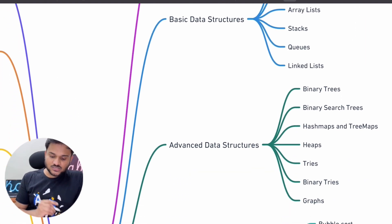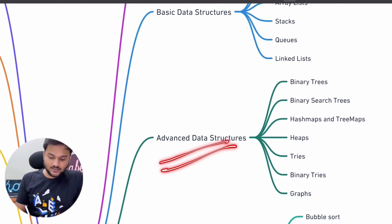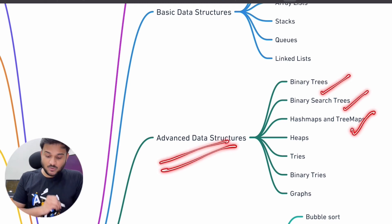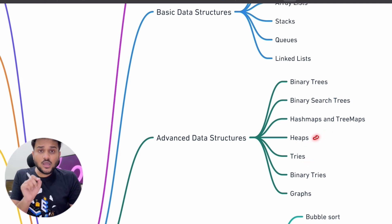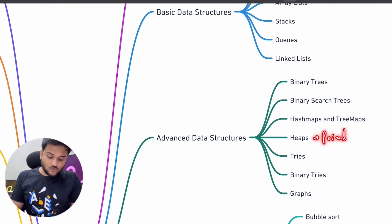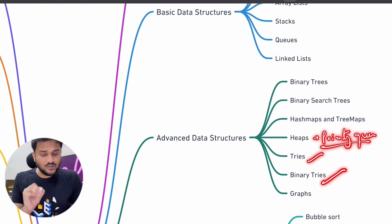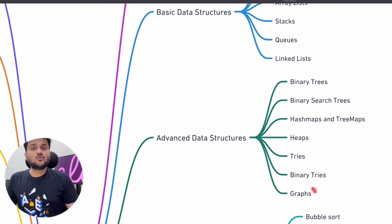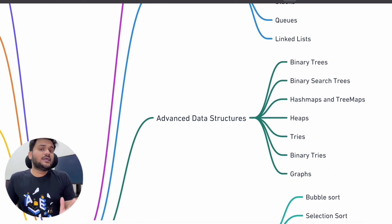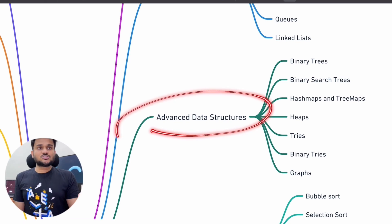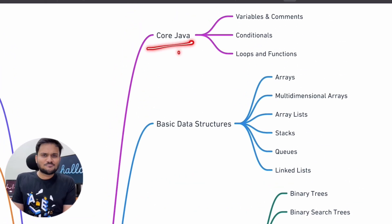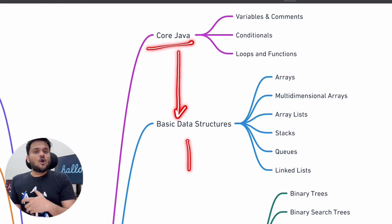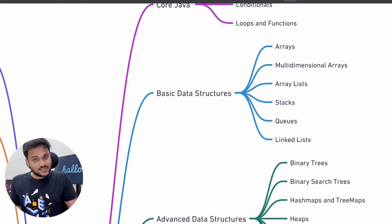Then we are going to move to advanced data structures where we will talk about things like binary trees, binary search trees, hash maps and tree maps, heaps — which will be the implementation used for priority queues — tries and binary tries. We will also talk about segment trees and graphs, including the implementation of graphs. Starting from extremely simple Java code of basic for loops and patterns, we are going to bring you to the level of these advanced data structures.